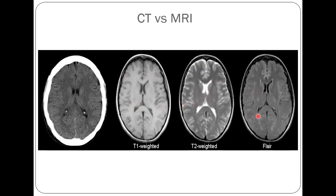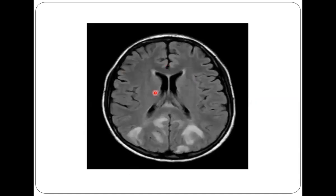Another imaging modality is FLAIR — Fluid Attenuated Inversion Recovery. In FLAIR, CSF appears black, which might make us think it is T1. But when we look at cortical differentiation, the outer gray matter is whiter than the inner — which means it is actually a T2-type image. What FLAIR does is suppress the CSF signal intensity so that any surrounding edema can be seen more easily. In this example image, the CSF signal has been suppressed, allowing us to better visualize cerebral edema.